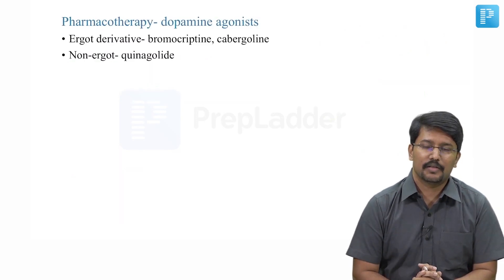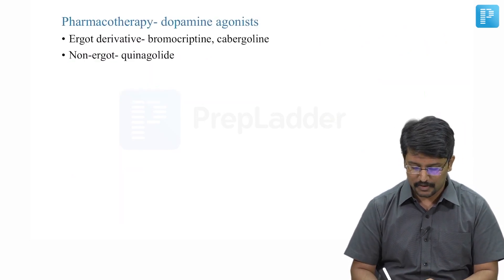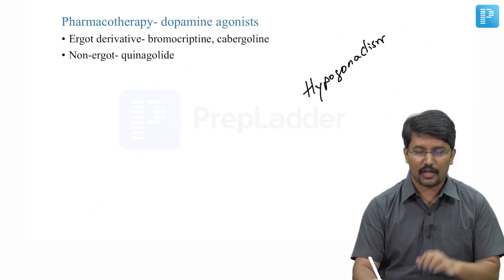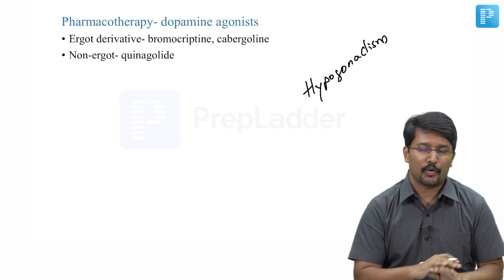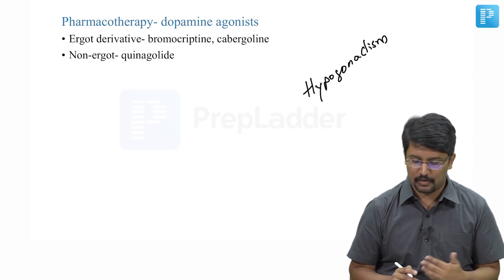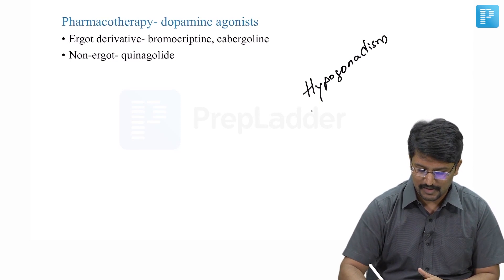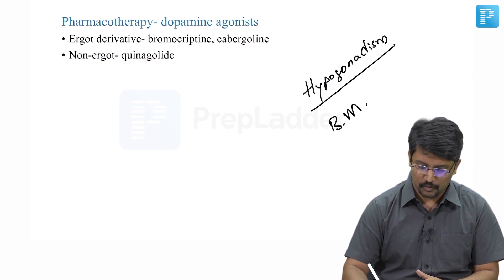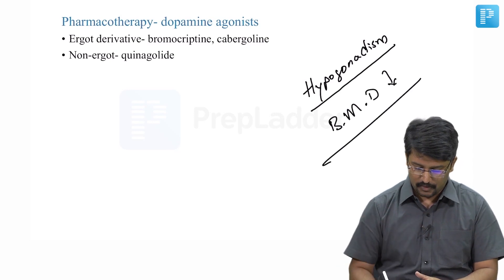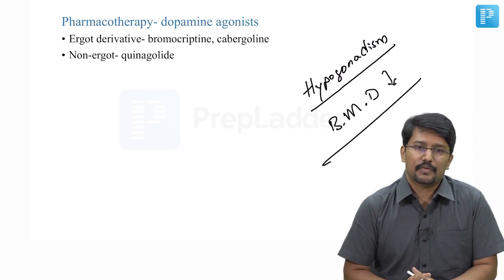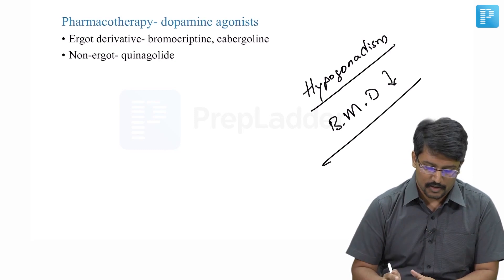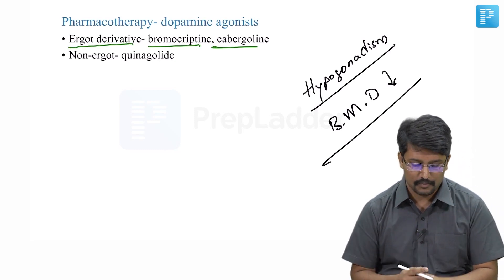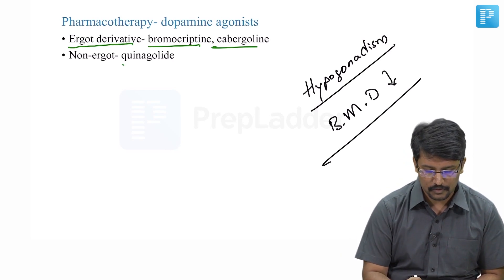When we decide to treat hyperprolactinemia — not talking about prolactinoma, but hyperprolactinemia due to other causes — we decide to treat if there is hypogonadism or reduced bone mineral density. The treatment options are dopamine agonists, which include two classes: ergot derivatives such as bromocriptine and cabergoline, and non-ergot derivatives such as quinagolide.